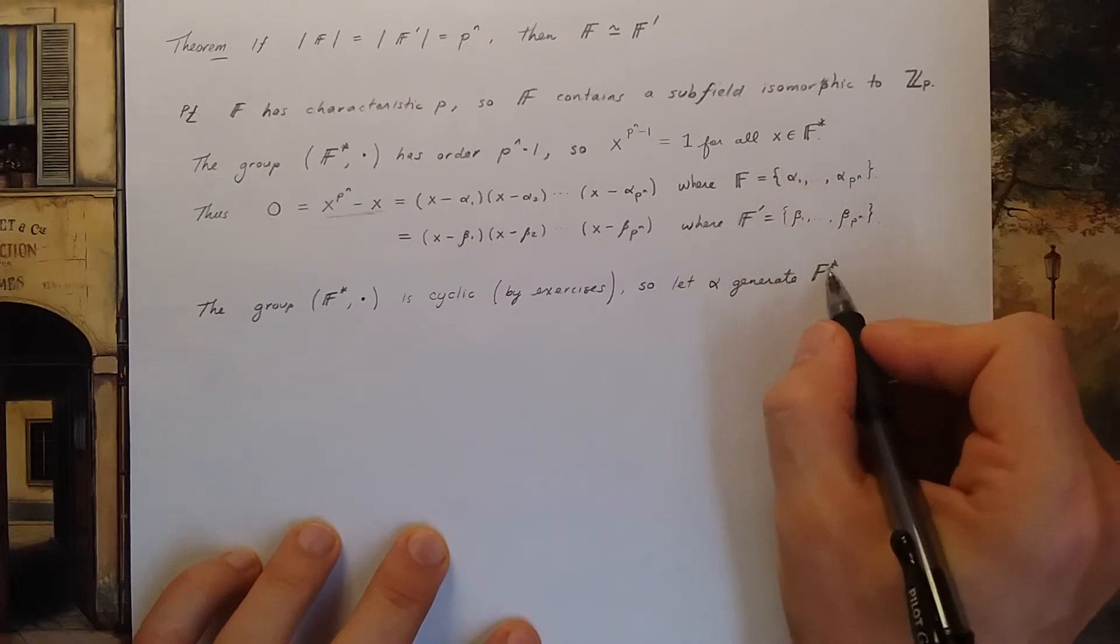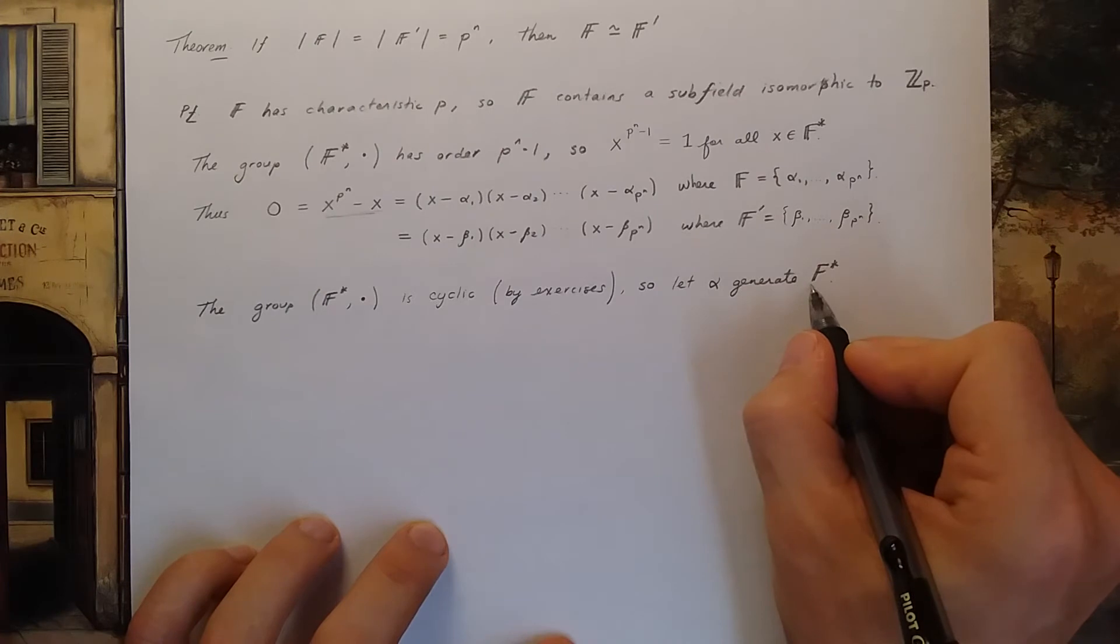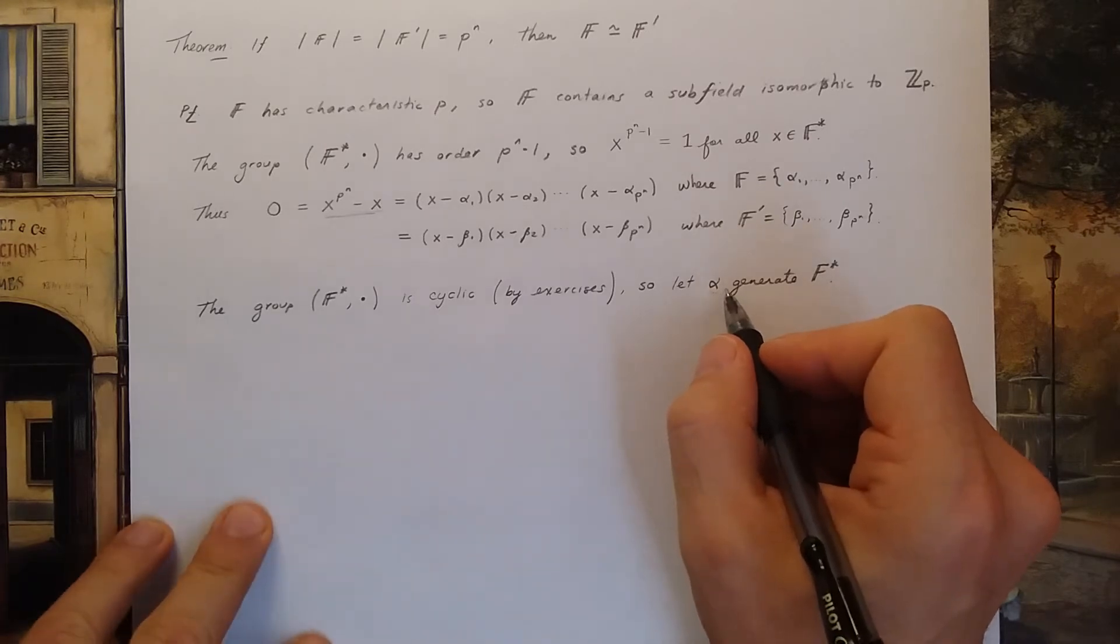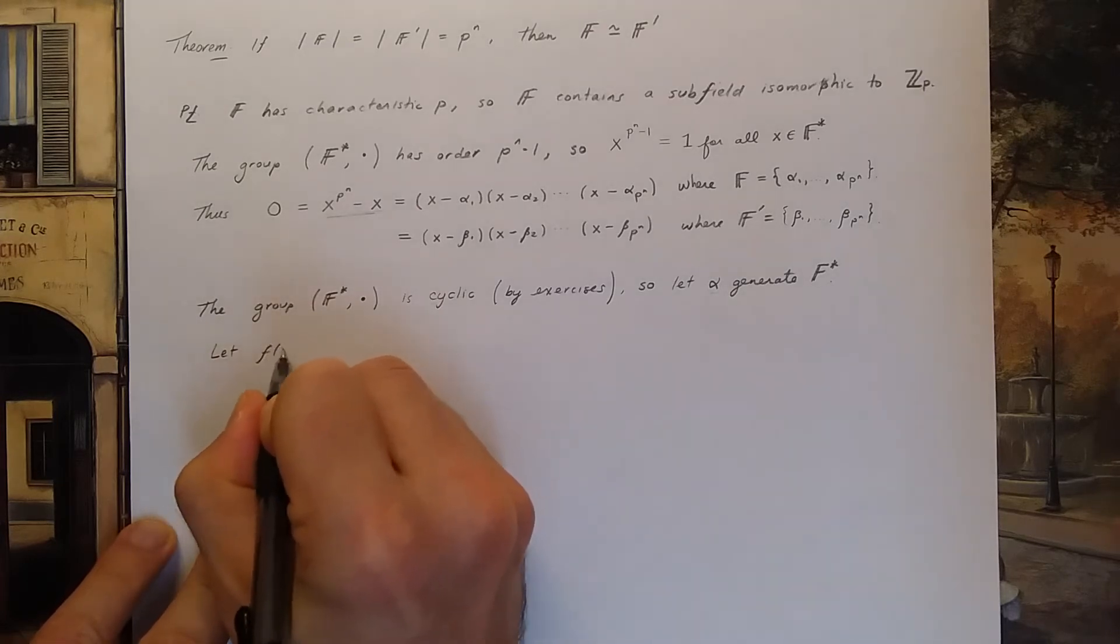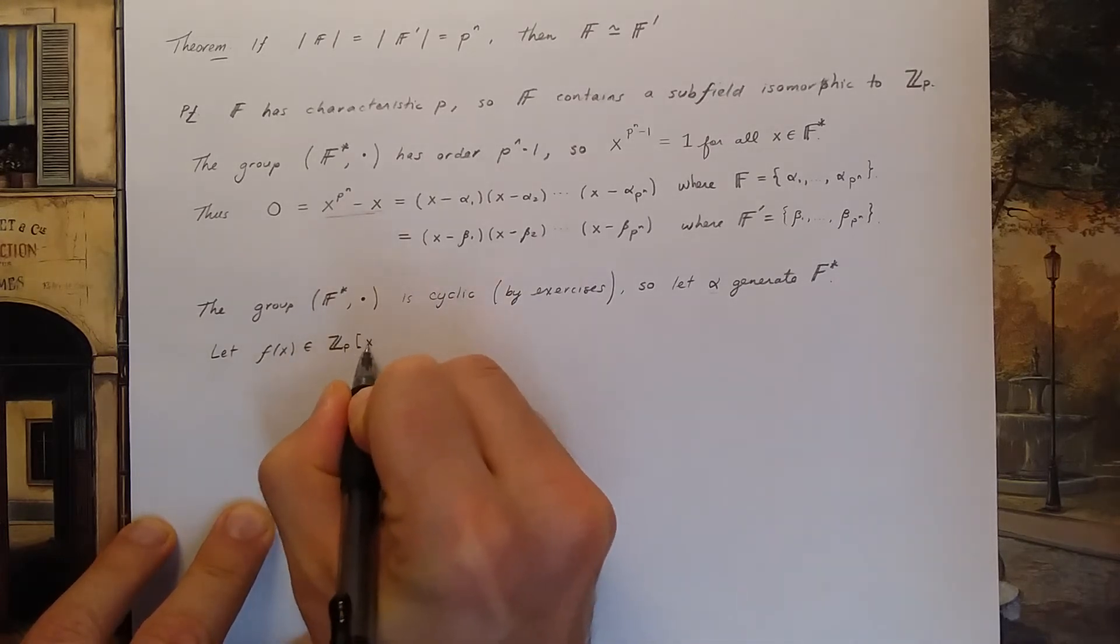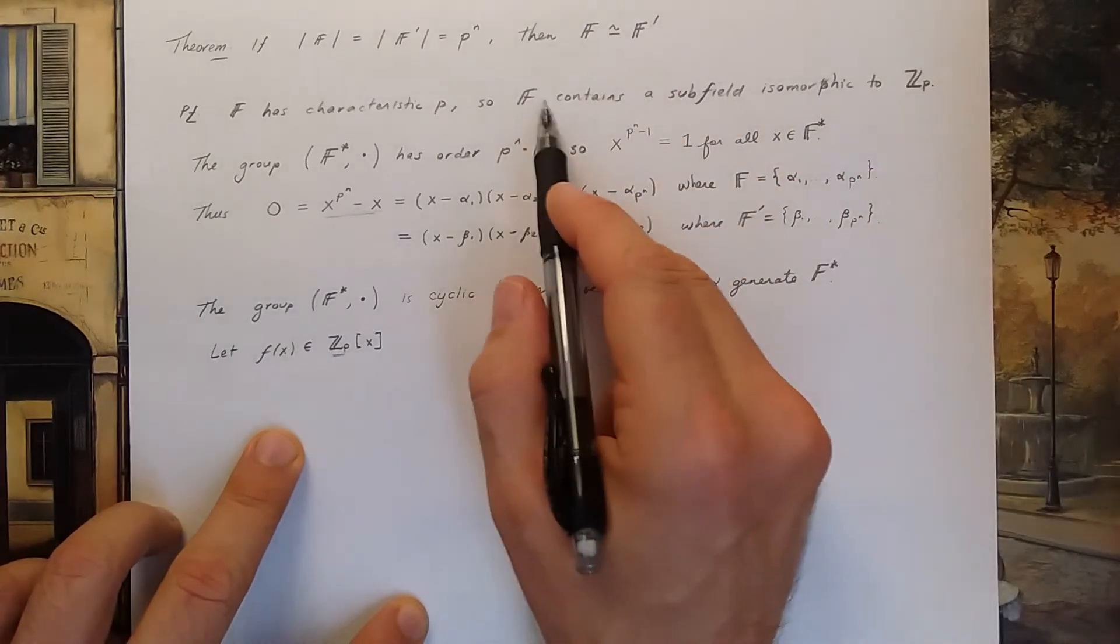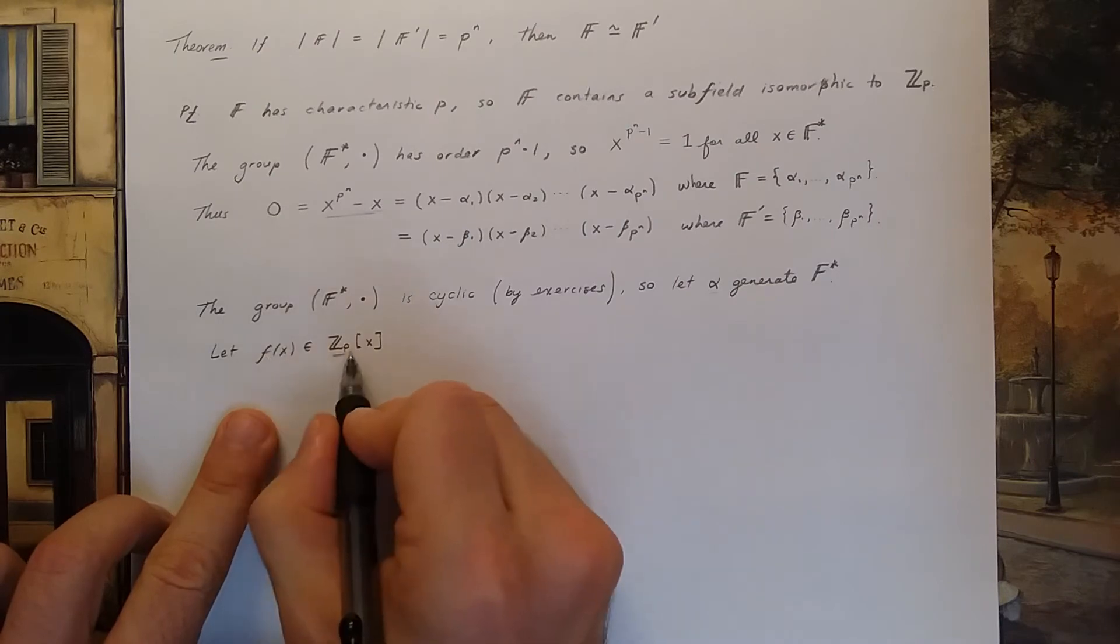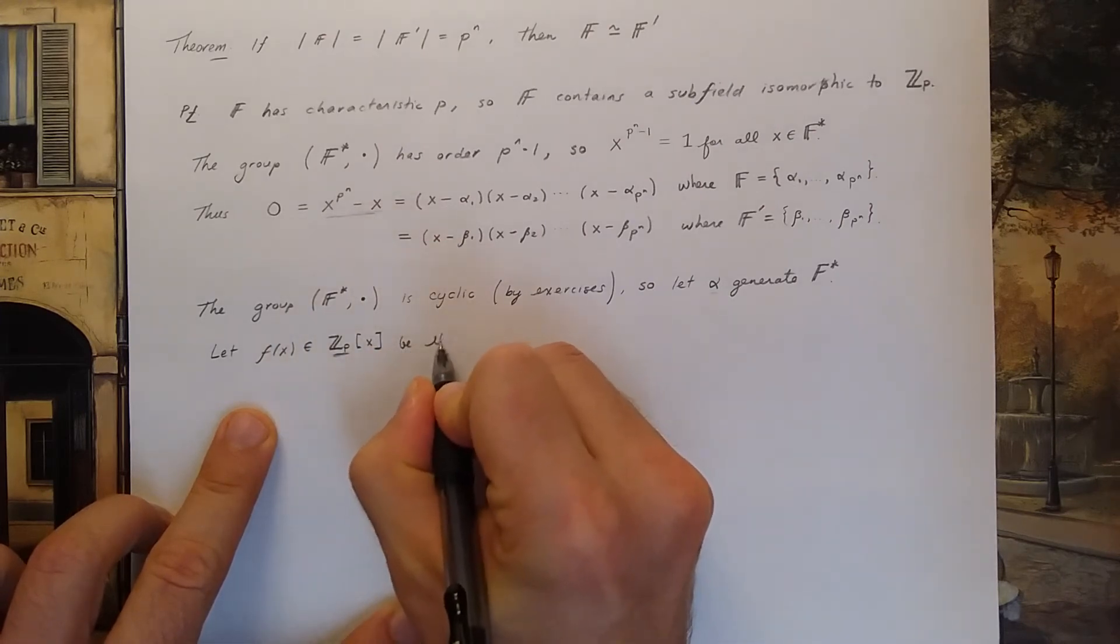So if it's cyclic we can let some element alpha generate the group with non-zero elements. I'm thinking of this in the group theory sense in that every element in this group is simply just a power of alpha. So I'm going to let f of x be an element in the ring of polynomials with coefficients in Zp. Since Zp is a subfield isomorphic to a subfield of F, I'm going to take an element f in the polynomials with coefficients in that subfield. And I'm going to let this be the minimal polynomial for alpha.